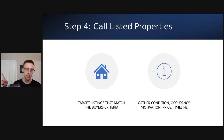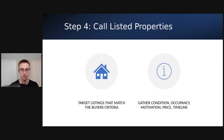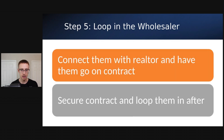I'll put a link in the top right-hand corner to two other videos — one going over how to find listings on Zillow, and another going over how to cover condition, occupancy, motivation, price, and timeline. Once you've gathered all that information from the listing agent, you move on to step five, which is looping that wholesaler back in.